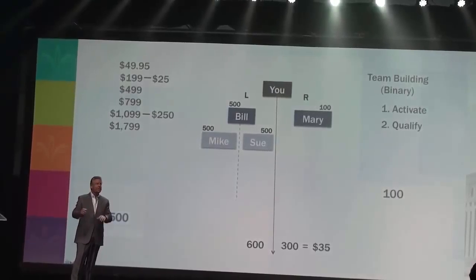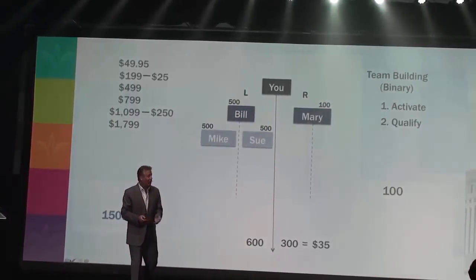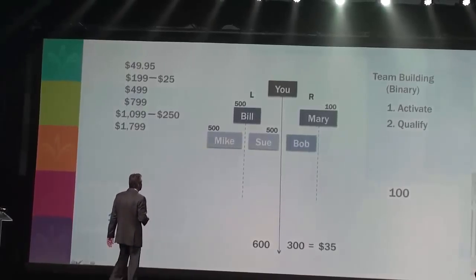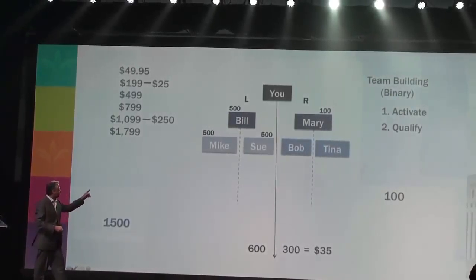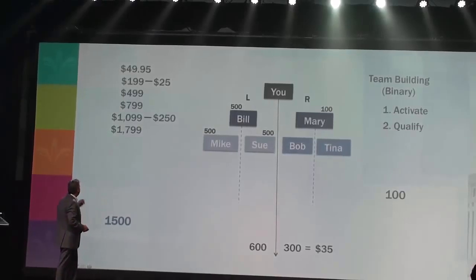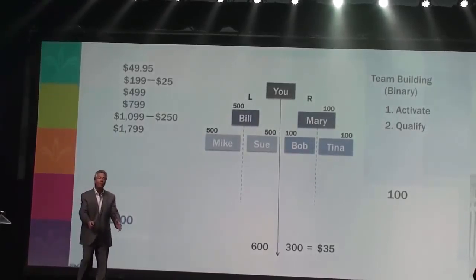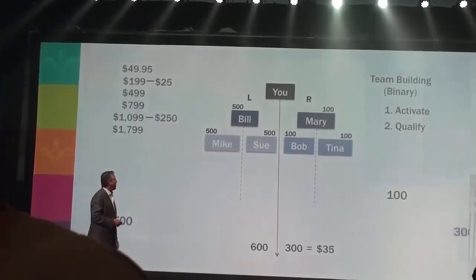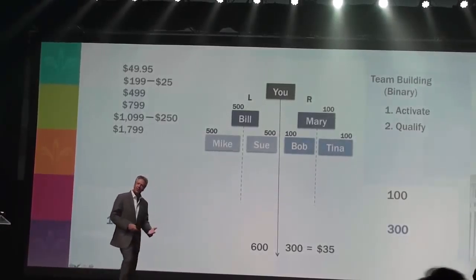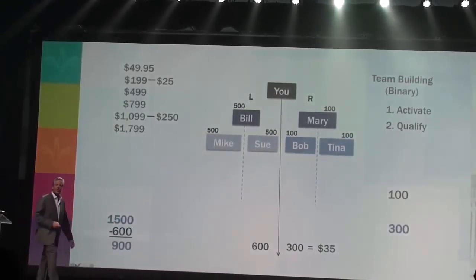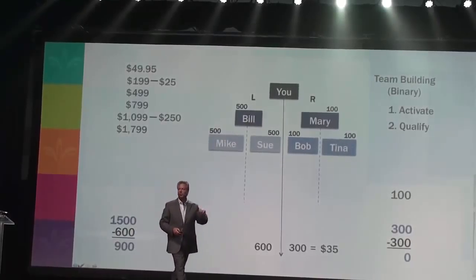Look at Mary. Mary's activated. The next thing she's got to do is qualify. Mary sent out the two-minute video on Instantly Ageless, her phone's ringing off the hook, and she has two friends who joined her in the business. She places Bob and Tina in, and they order the basic pack just like Mary did. Mary makes $25 times two, $50 for her time and trouble, and 100 points goes into the plan for each order. Now we have 300 points on the right team. The computer says stop — we have to pay you. Boom. You just made $35.